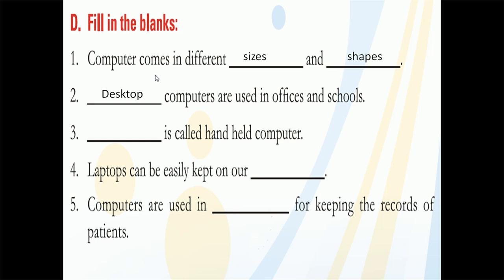Next: blank is called a handheld computer. Handheld means you can keep that computer in your hand. There are three types: desktop kept on a desk, laptop kept on your lap, and palmtop kept in your hand. Palmtop computers are very small, like your phone, so the answer is palmtop.